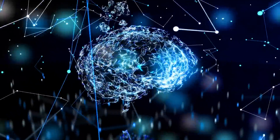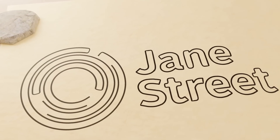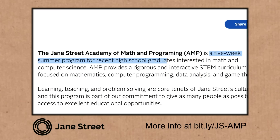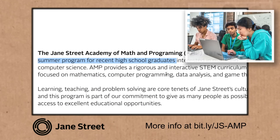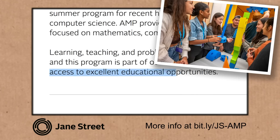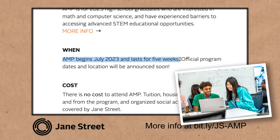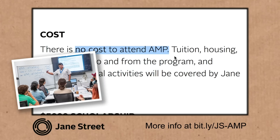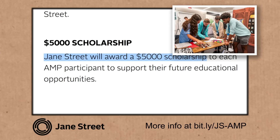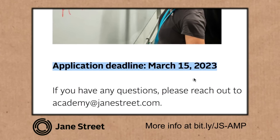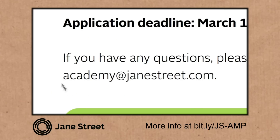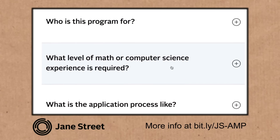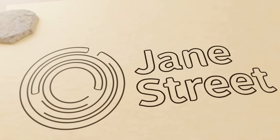If you have a brain for numbers and you're about to start university, this could be your moment. Our episode sponsor Jane Street is running its Academy of Math and Programming — a five-week summer program for recent high school graduates, particularly those who've experienced barriers to access and opportunity. It's happening in July, all expenses are paid including accommodation and travel, and they're also providing a $5,000 scholarship to support future opportunities. Check out the details on the Jane Street website — link in the video description. Thanks to Jane Street for their support.